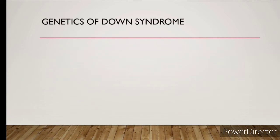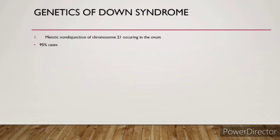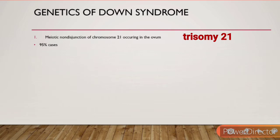Now, the genetics of Down syndrome — pay attention here as MCQs are frequently asked from this portion. The first cause of Down syndrome is meiotic non-disjunction of chromosome 21 occurring in the ovum. Down syndrome is also called trisomy 21.